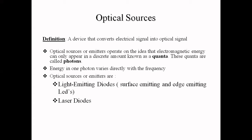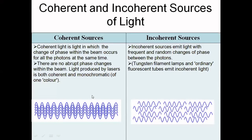There are two types of optical sources used in communication — light emitting diodes and laser diodes. The first concept related to optical sources is coherence and incoherence. Coherent light is light in which the change of phase within the beam occurs for all photons at the same time. For example, there are five photons traveling and their phase change happens at the same time. Laser is the best example of a coherent source.